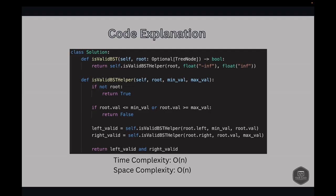For complexity analysis: the time complexity is O(N), where N is the number of nodes in the binary tree, since we visit each node once. The space complexity is O(N) due to the recursive call stack, where N is the height of the binary tree.